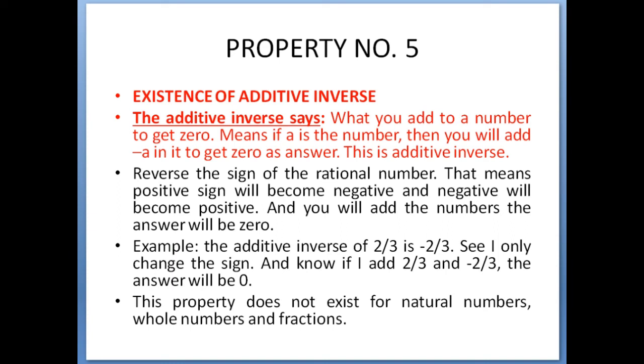Means if you have any rational number—suppose it has a positive sign—then when you write its additive inverse, it will have a minus sign; it will become negative. You have to reverse the sign of the rational number. Positive sign will become negative and negative will become positive. And when you add those two rational numbers, the answer will be 0.